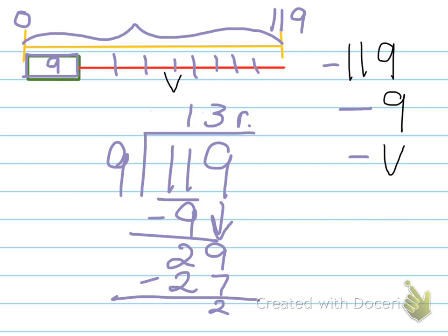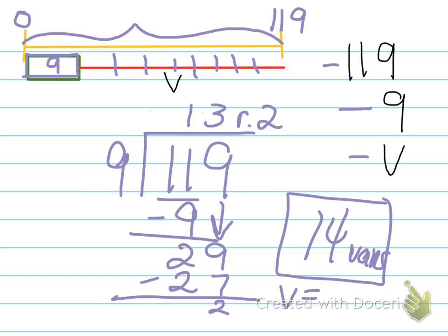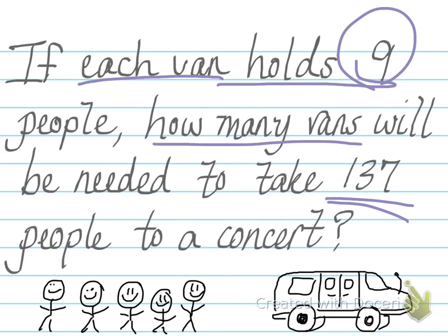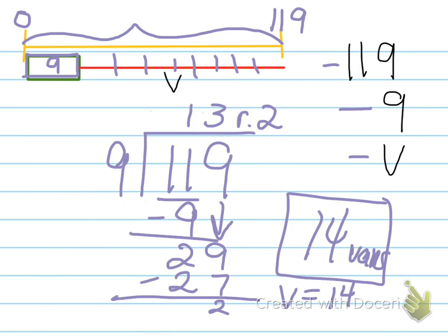So if I get 13 vans, I'll have a remainder of 2 people that couldn't go to the concert. So how many vans do I actually need? I'm going to need 14 vans. Alright. So that's how we draw a picture and we write an equation that goes along with it. And actually, I can solve the equation. I can write v equals 14 for my equation that I wrote a few minutes ago.